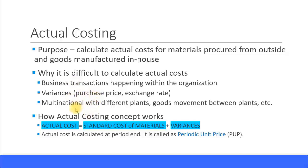Another scenario that makes it harder is when you have a multinational organization with different plants across different countries, and there is movement of goods between these plants. This will inevitably introduce exchange rate and other types of variances. This makes actual costing difficult, and hence the system uses the material ledger to perform the actual costing calculation.